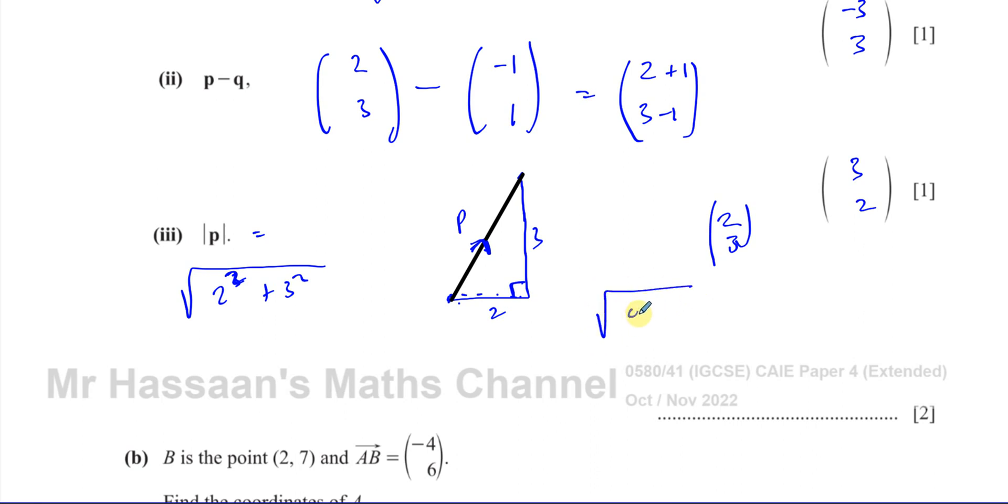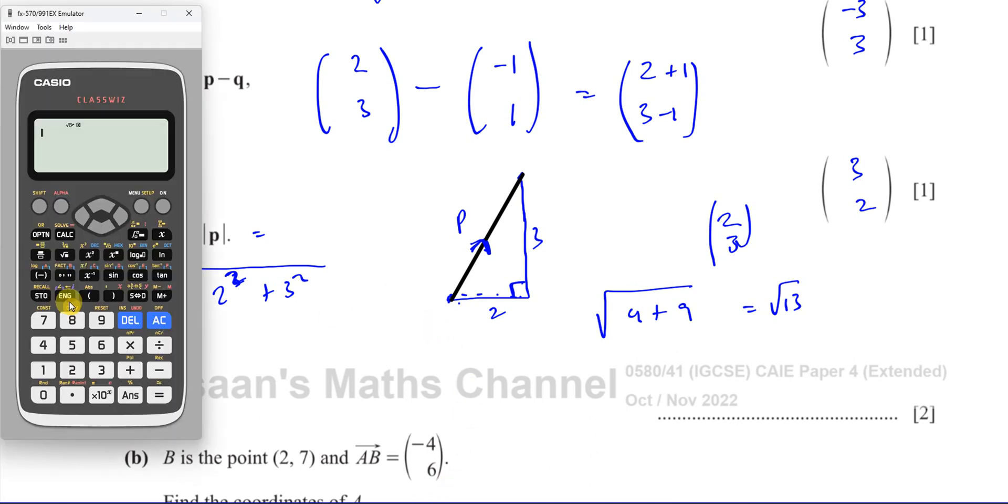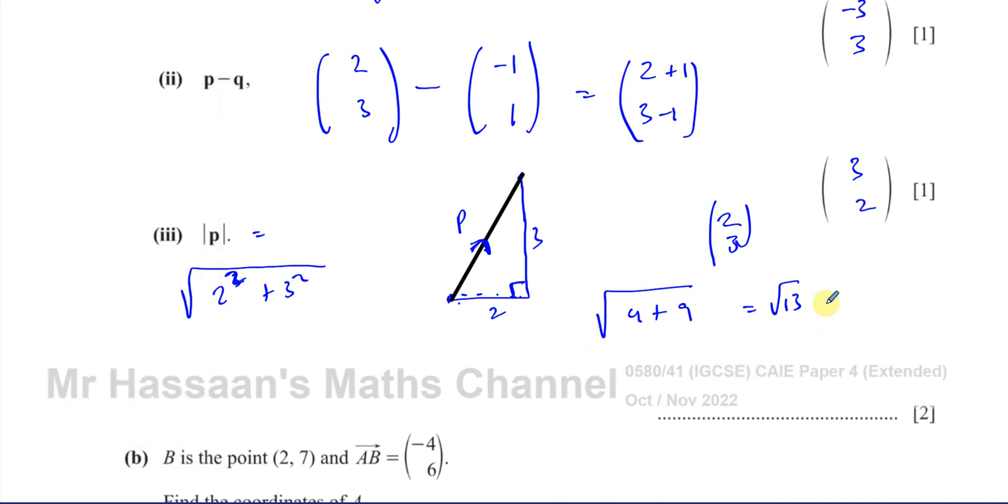So basically the length of vector p is 2 squared plus 3 squared, square root. So the square root of 2 squared plus 3 squared will give you the magnitude of vector p. So it's going to be the square root of 4 plus 9, which is the square root of 13. Now this is an answer which won't give you an exact answer. So we should round this to 3SF. So we'll take our calculator and we'll put square root of 13, and that gives you 3.60555. So 3SF will be 3.61.